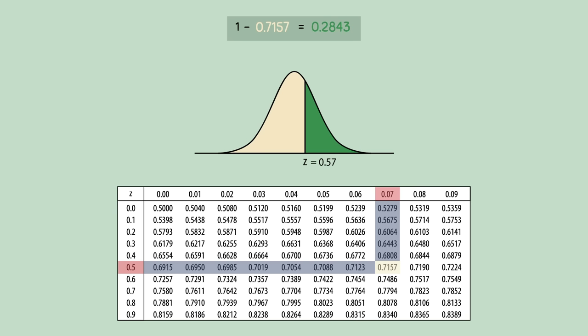The reason we can do this is because the normal distribution is a density curve, and it always has a total area equal to 1, or 100%.